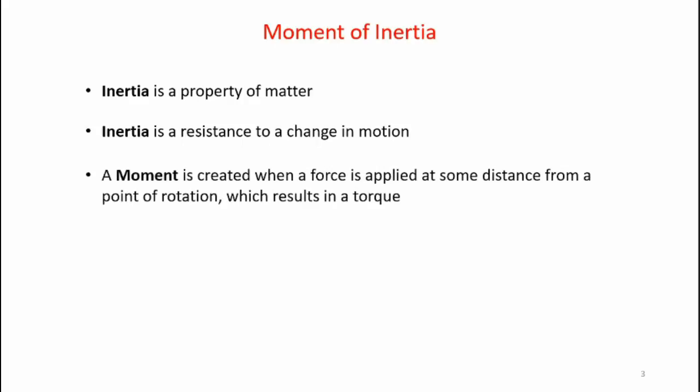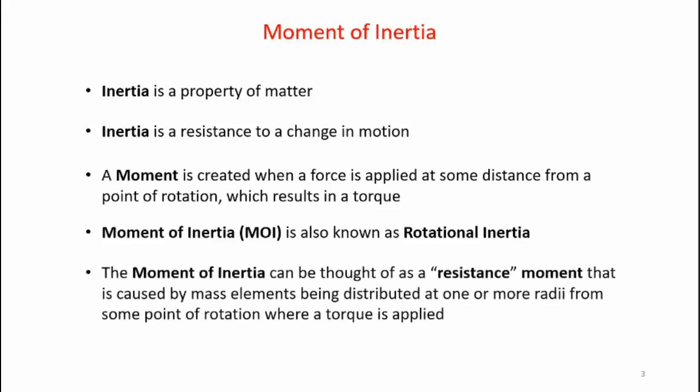Now moment of inertia involves a moment. So a moment is created when a force is applied at some distance from a point of rotation which results in a torque. Now moment of inertia is also known as rotational inertia. And the moment of inertia can be thought of as a resistance moment that is caused by mass elements being distributed at one or more radii from some point of rotation where the torque is applied.